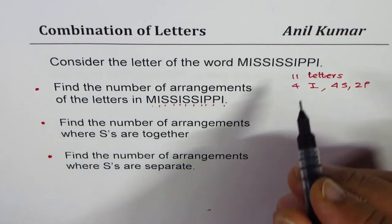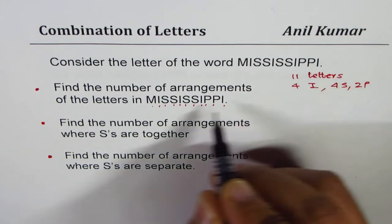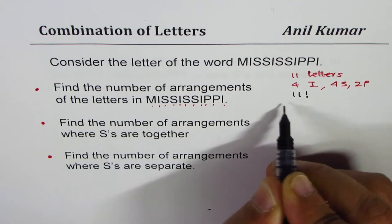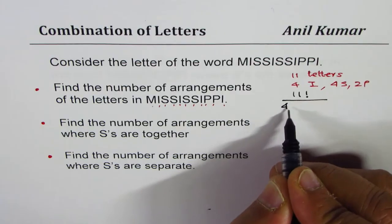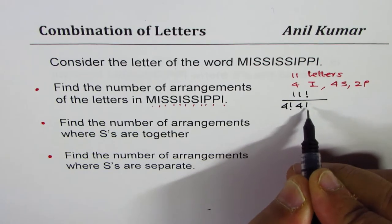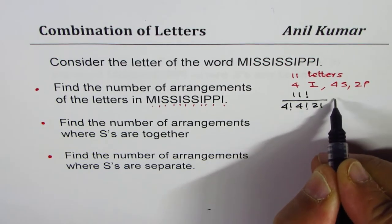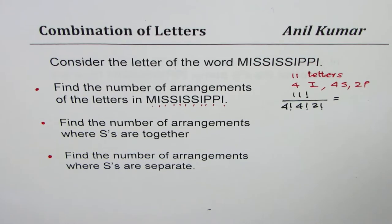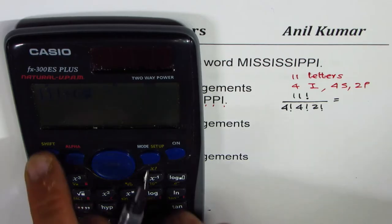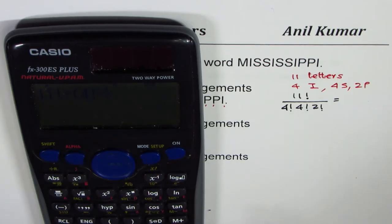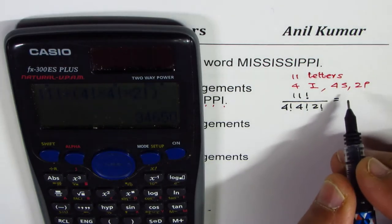Now we need to find the number of arrangements for all these letters. The answer is 11 factorial — total combinations — divided by how many are of the same kind: 4 I's so divide by 4 factorial, 4 S's so divide by 4 factorial, and 2 P's so divide by 2 factorial. That gives us 11! / (4! × 4! × 2!) = 34,650.